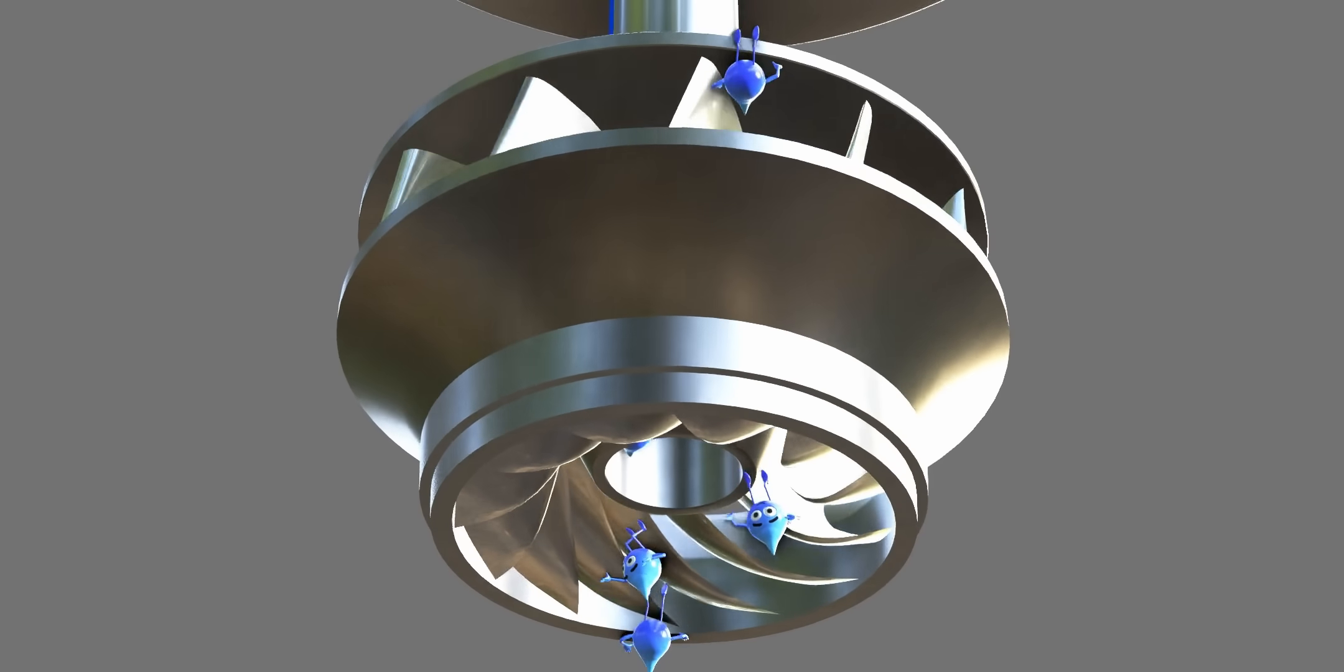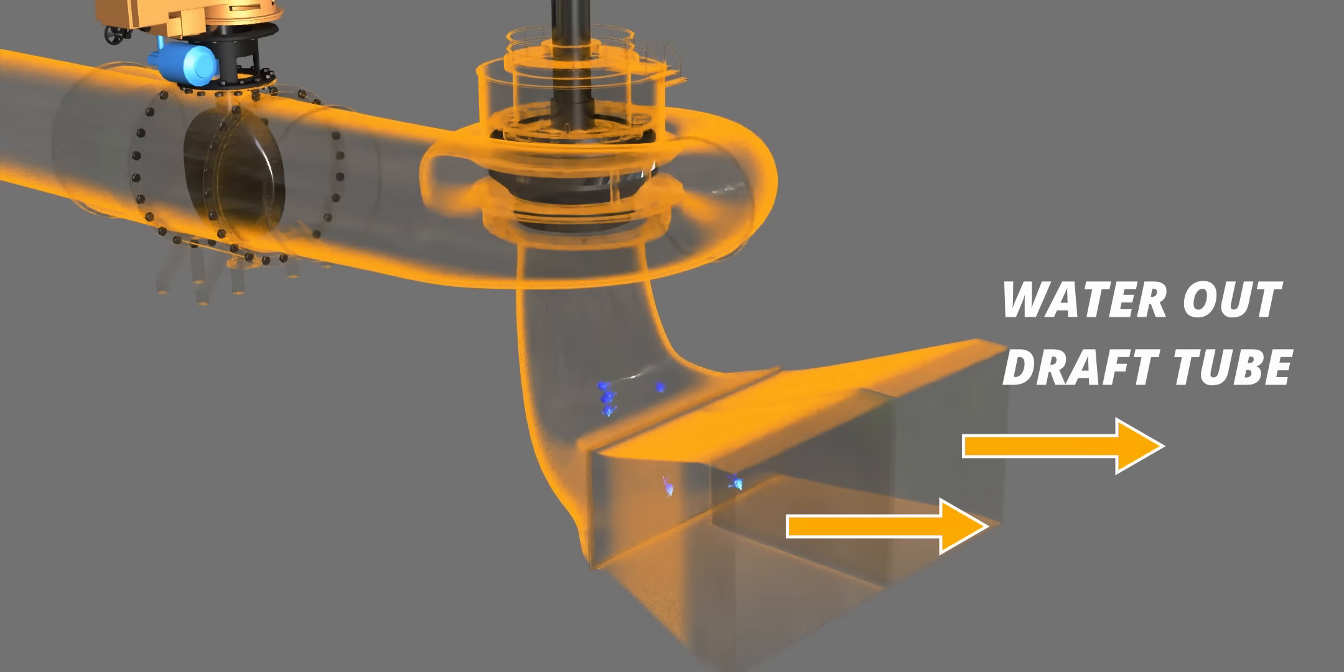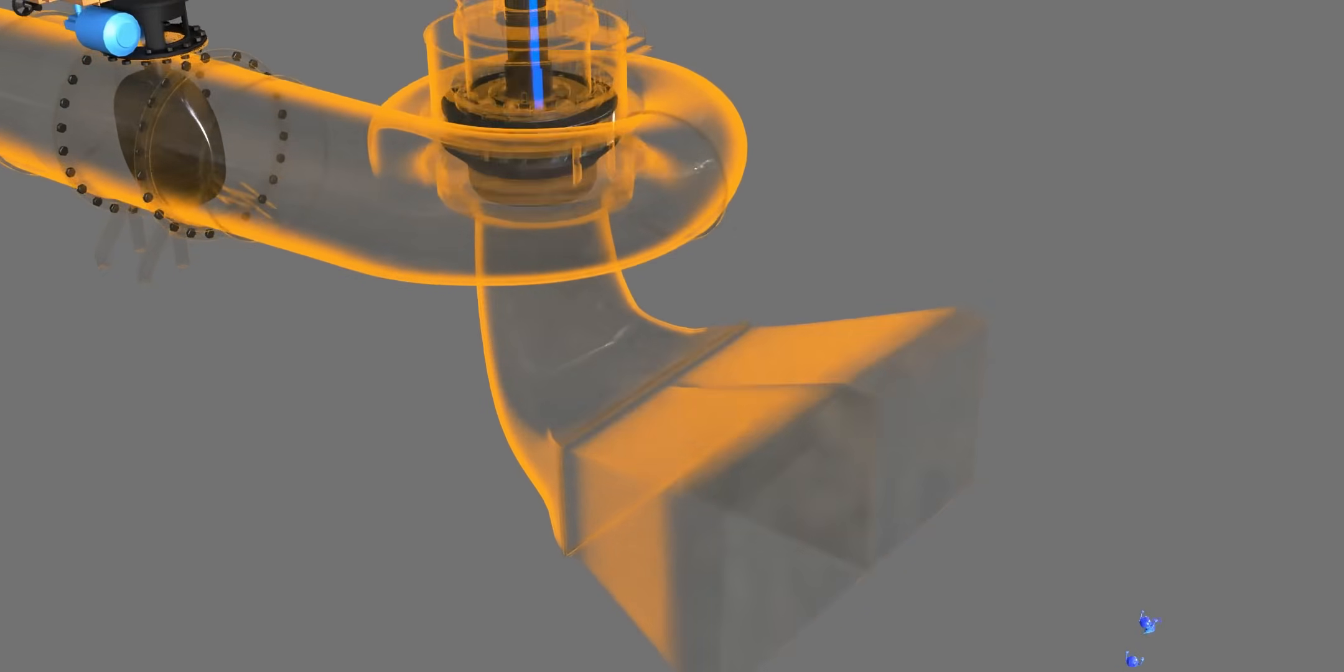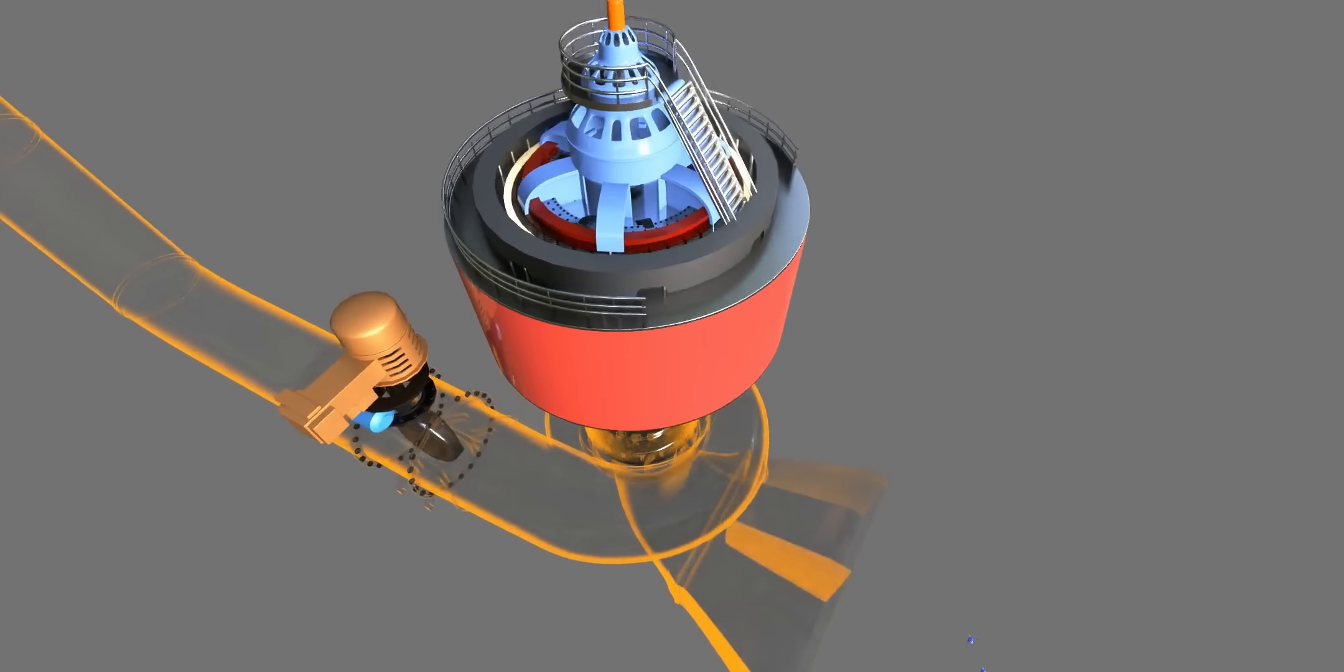At the exit of the turbine, the water stream loses its pressure and kinetic energy and exits via a draft tube. The water stream's energy drop is the turbine's energy gain. The turbine transfers this energy to the generator and we get electricity.